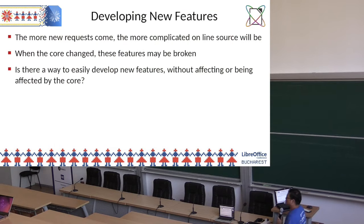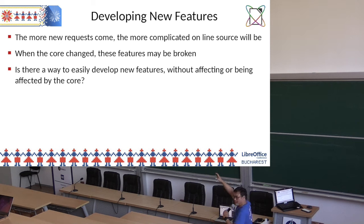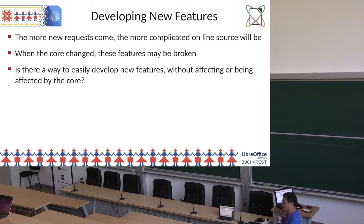They have quite a few feature requests. But then they found a serious problem: when trying to implement those requests, they sometimes have to change some part of the core. And if the upstream changes something in the core, that might break the implemented feature. That's the problem they are facing.